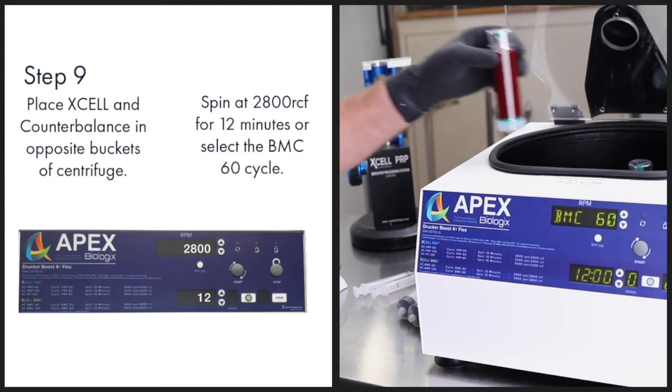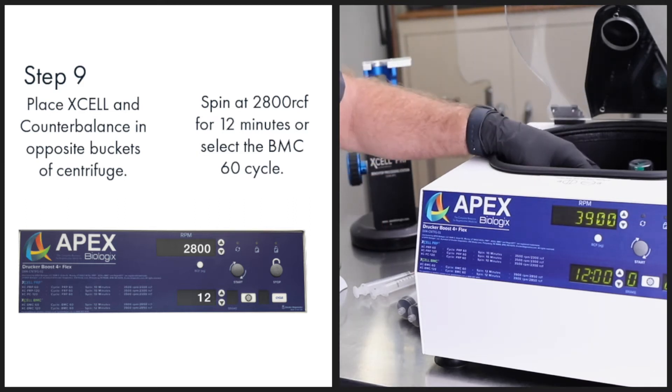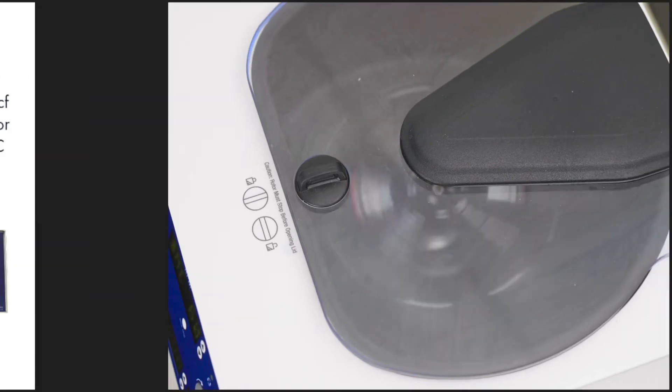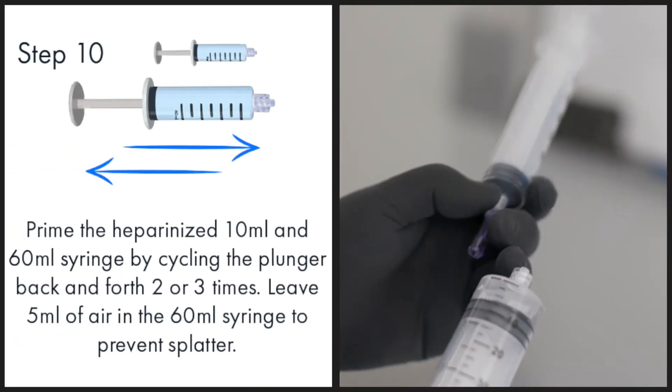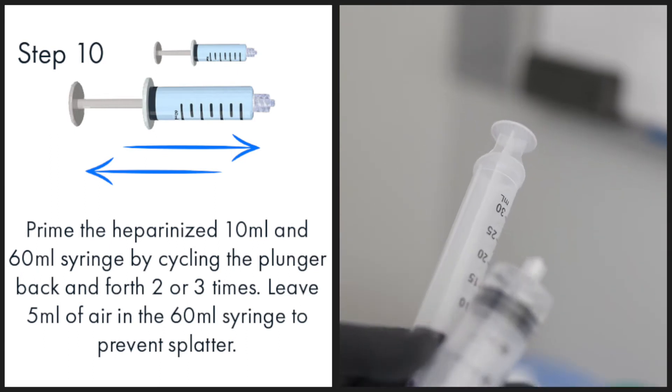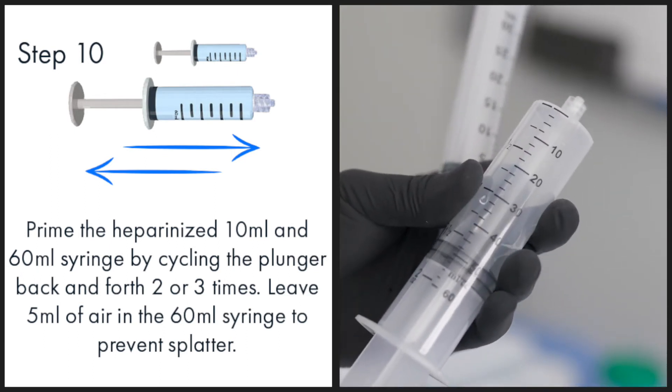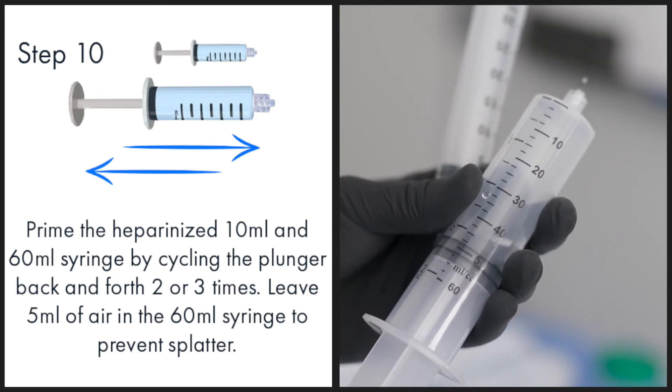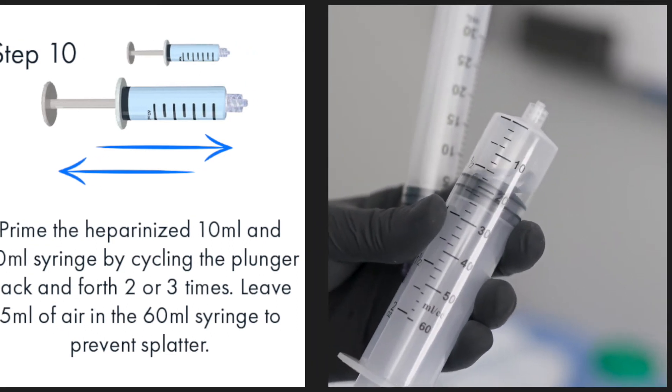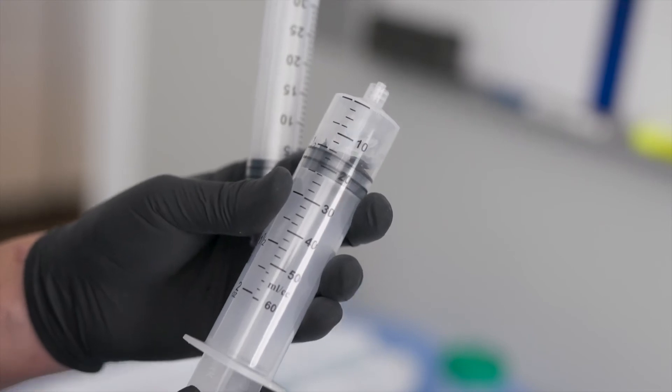Spin at 2800 RCF for 12 minutes or select bone marrow concentrate 60 cycle on the centrifuge. Prime the heparinized 10 milliliter and 60 milliliter syringe by cycling the plunger back and forth two to three times. Leave five milliliters of air in the 60 milliliter syringe to prevent splatter.